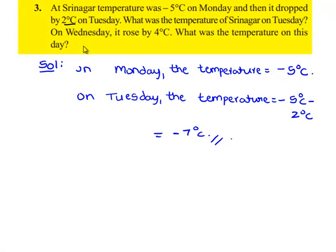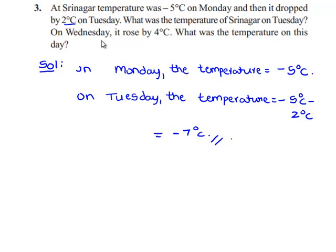Coming to the second bit of the question. On Wednesday, it rose by 4 degrees Celsius. Therefore, in order to find the temperature on Wednesday, we have to add 4 degrees Celsius to the temperature on Tuesday. The temperature on Tuesday is minus 7 degrees Celsius. We'll note it down.